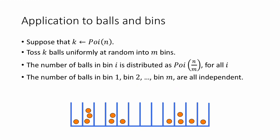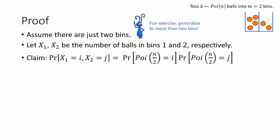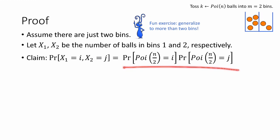We'll see a few ways to make use of this later, but first let's prove that the number of balls in each bin is a Poisson random variable and that they're all independent. For simplicity, I'm going to assume there are just two bins — the case for m bins is basically the same. So let x1 and x2 be the number of balls in bins 1 and 2 respectively. We want to show that x1 and x2 are independent Poisson random variables each with parameter n over 2. Let's consider the probability that x1 equals i and x2 equals j for any fixed i and j.